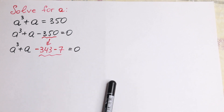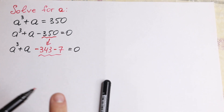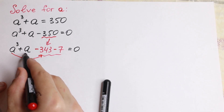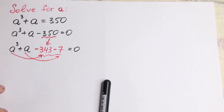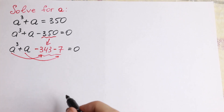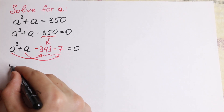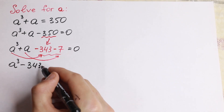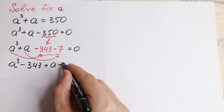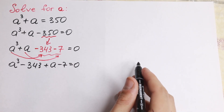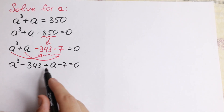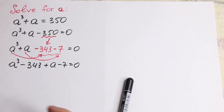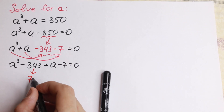We have this expression with a cube plus a at the beginning, so we just write 350 like that. I write it this way because 343 is a really good number — we can group it with a cube, and this a we can group with this element. So we will have a cube minus 343 and plus a minus 7. Moreover, 343 is a really good number because it is equal to 7 cube.